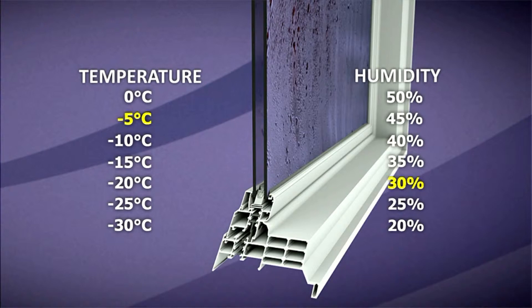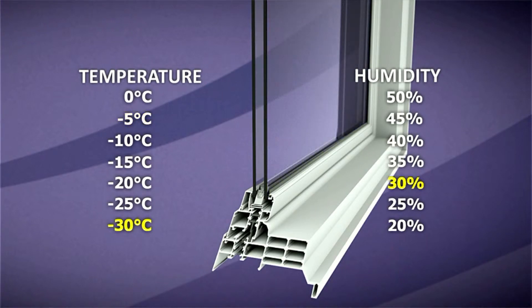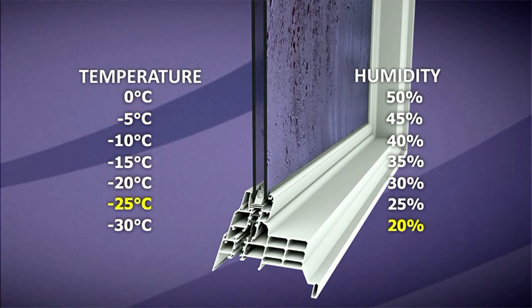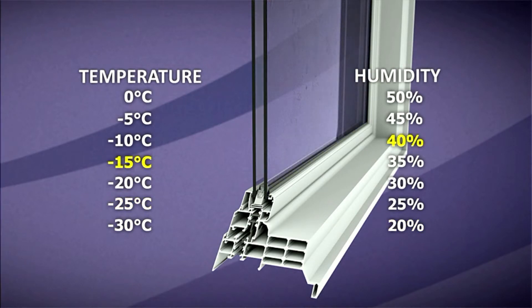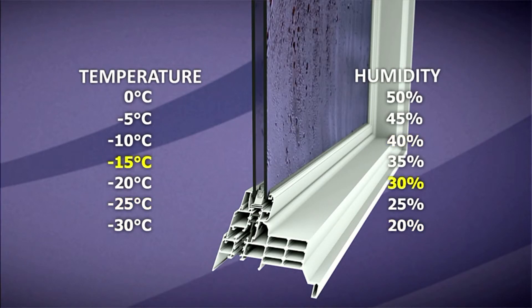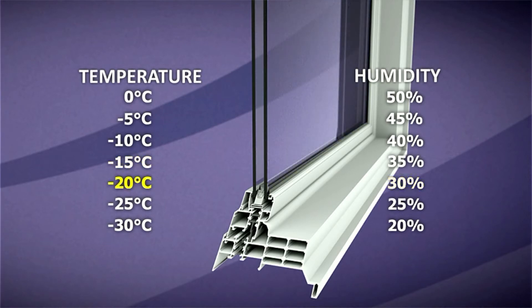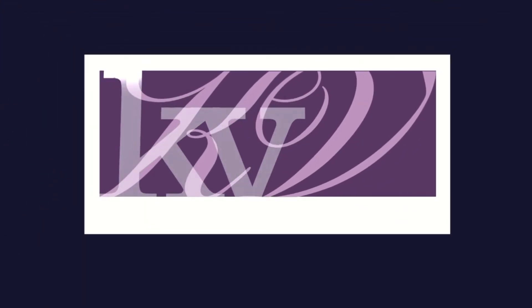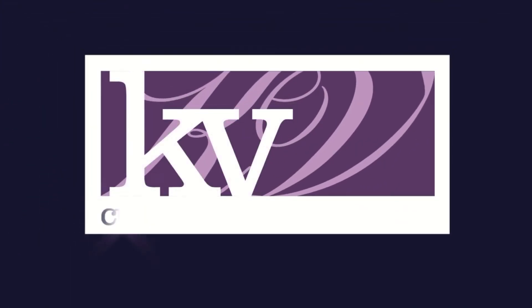However, if the relative humidity inside your home is more than 30% when the outside temperature is minus 20 degrees centigrade or colder, then condensation may form on any window's insulated glass unit, even an energy efficient product from KV. Contact your local KV dealer to better understand your insulated glass unit options.